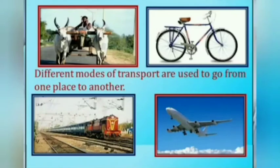Can you see the picture here? There is a picture of a bullock cart, cycle, train, and aeroplane. There are different modes of transport used to go from one place to another, and these four modes are roadways, railways, waterways, and airways.